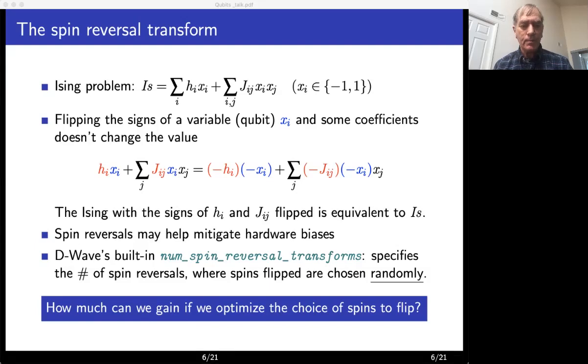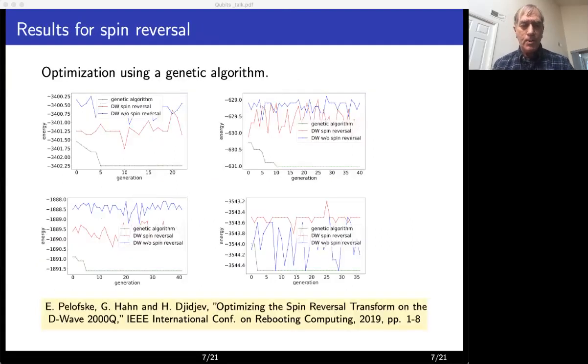D-Wave has a built-in function, num_spin_reversal_transforms, which specifies some number of spin reversals, and then which spins will be flipped are chosen randomly. So the question we're going to try to answer is how much can we gain if instead of random we optimize the choices of spins to flip. In order to optimize the choice of the set of bits to flip, we use genetic algorithm. We made this choice because of the large number of variables and the lack of any apparent structure of the problem.